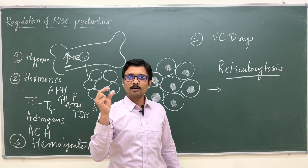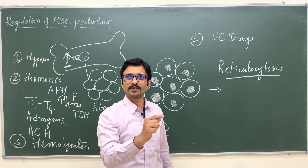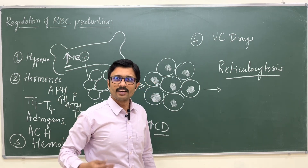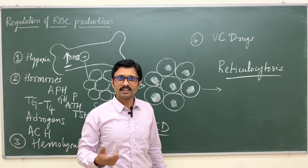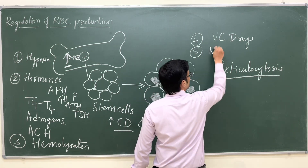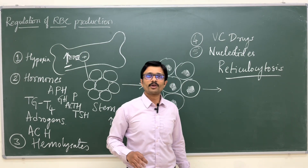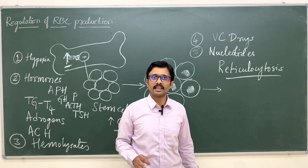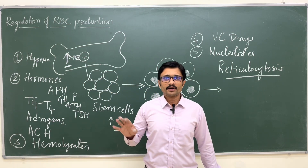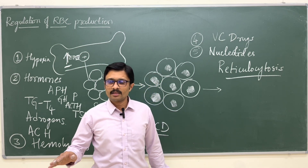The fourth factor that can increase erythropoietin secretion is vasoconstrictor drugs. These drugs constrict blood vessels, decreasing blood flow to the kidneys, causing renal hypoxia, which is a potent stimulus for erythropoietin secretion and thereby increases red blood cell production. Catecholamines and sympathetics are vasoconstrictors. The fifth factor is nucleotides — cyclic AMP, NAD, and various nucleotides can act on the kidneys to increase erythropoietin secretion, increasing RBC production.